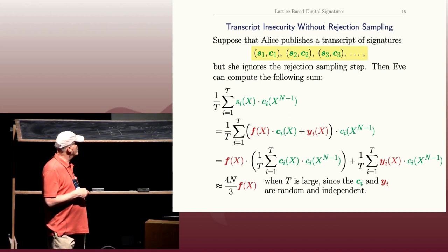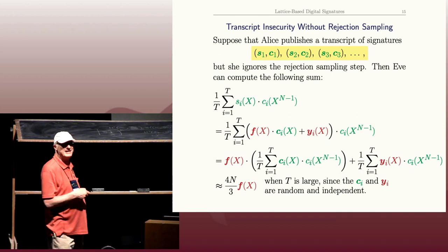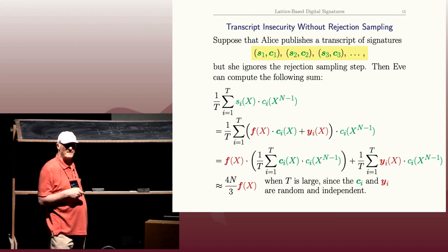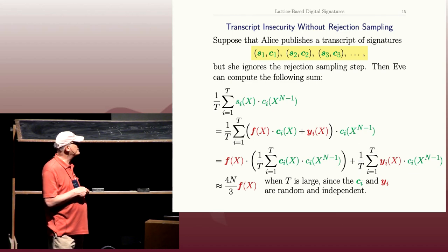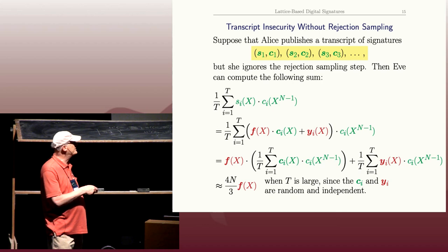What about over here? Here I have C_i(X) times C_i(X^{-1}) in some sense. C_i(X) and C_i(X^{-1}), those are not independent of each other, right? They both depend on i. And if you do an analysis of this, this average actually converges if the C_i's are chosen randomly to something non-zero.